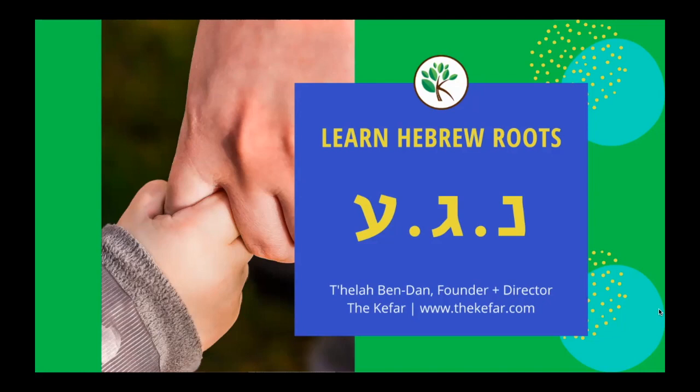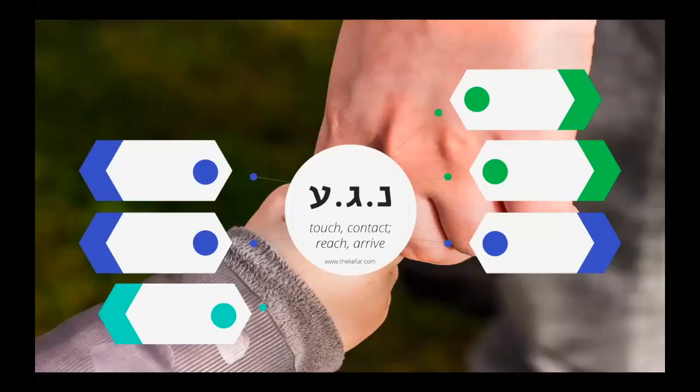You can also find a link to a Quizlet that you can use to help you review. For this lesson, our shoresh is nun, gimel, ayin — naga. Words with this shoresh have to do with making some sort of contact, either physical contact like touching, or making contact, reaching, or arriving. This one has a bit of a broader meaning than some of our other shoroshim.